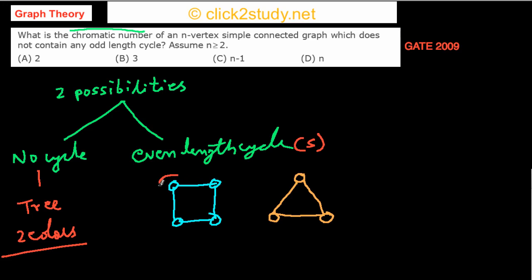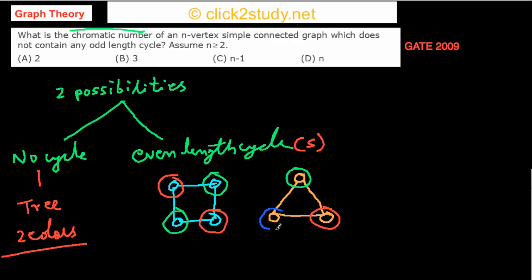An even-length cycle can be colored with just two colors: go around alternating red, green, red, green. But with an odd-length cycle, if you start with green, then red, you reach the last vertex where you can't use green or red because both adjacent vertices already use those colors — so you need a third color, say blue. An odd cycle requires three colors.